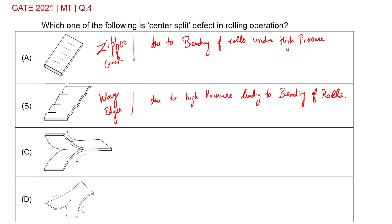Option C: this defect is known as alligatoring, caused by friction between the roll surface and the upper and lower workpiece surface. The elongation at the surface due to friction is lesser compared to the deformation at the center, which ultimately leads to the opening of the sheet like the mouth of an alligator — hence the name alligatoring defect.